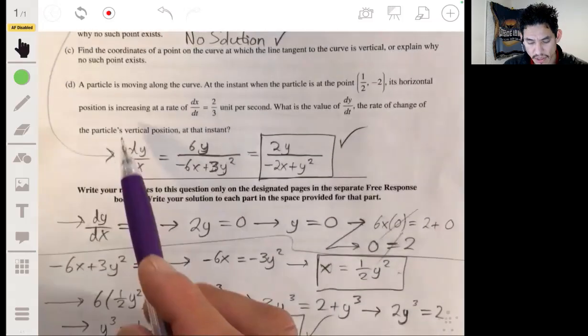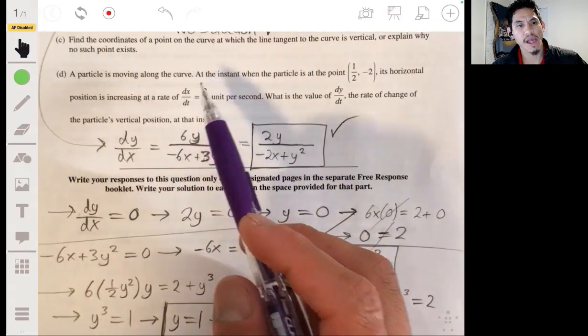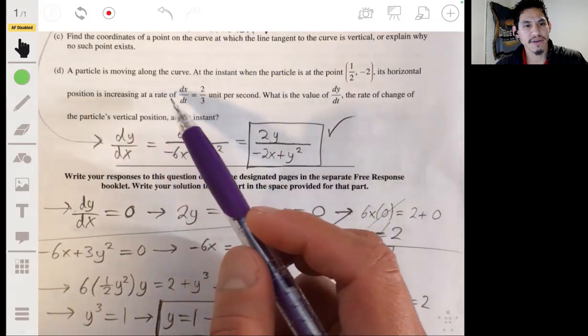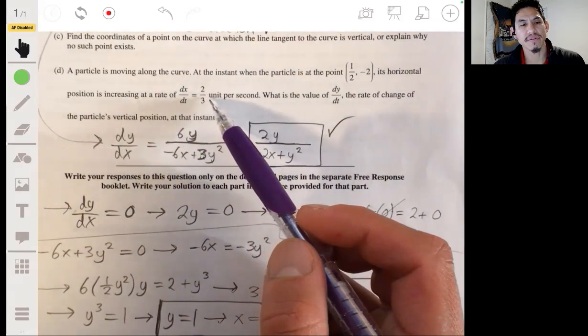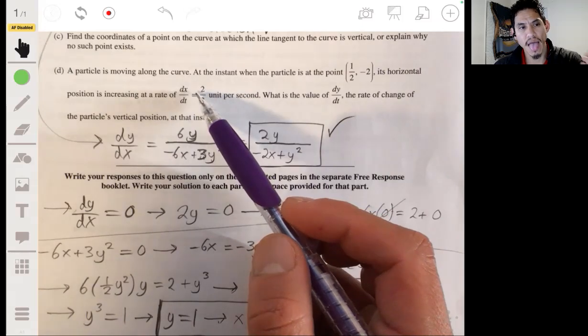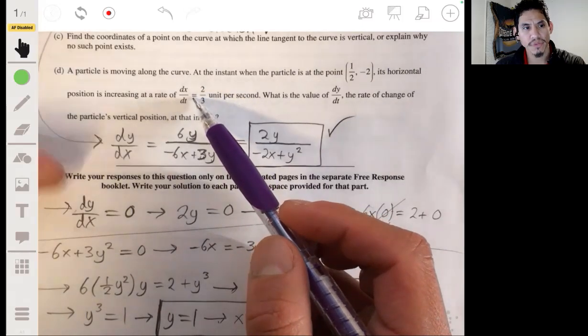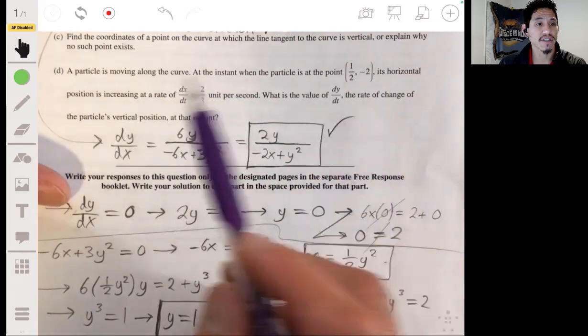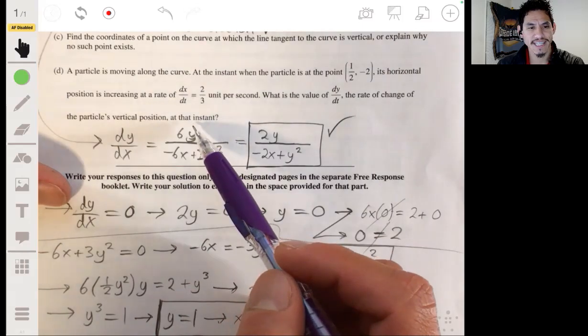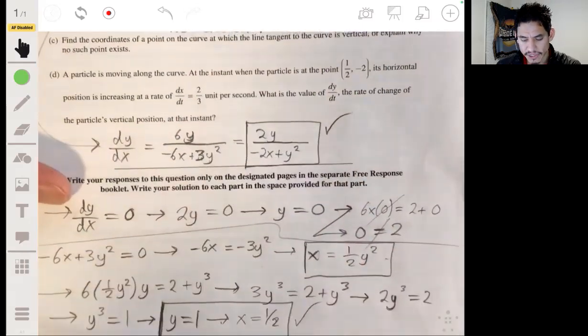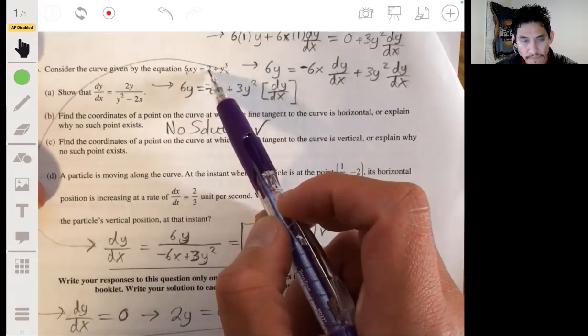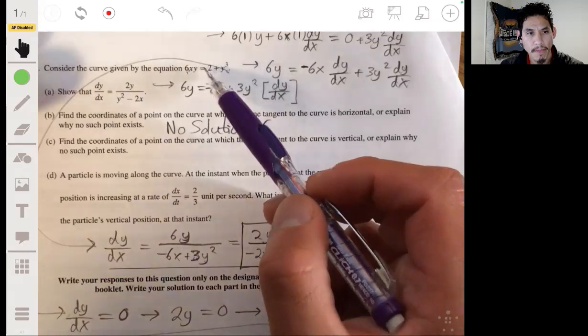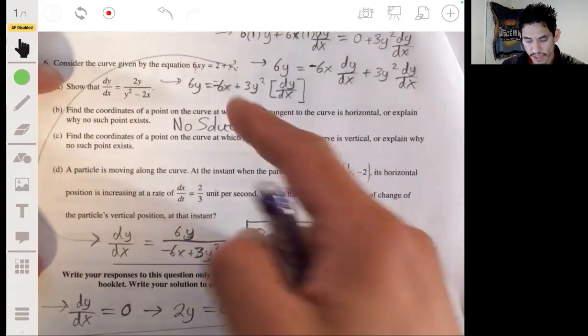All right, in part D, a particle is moving along the curve. At the instant when the particle is at the point one-half negative two, its horizontal position is increasing at a rate of dx/dt, where dx/dt is the horizontal rate, is two-thirds unit per second. What's the value of dy/dt, the rate of change of the particle's vertical position at that instant. So we go back to this equation, but we're going to differentiate it with respect to t.